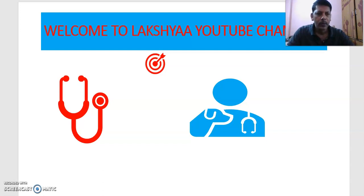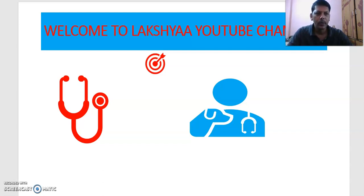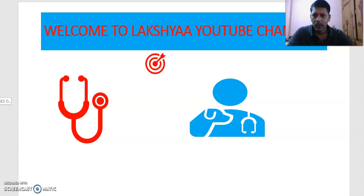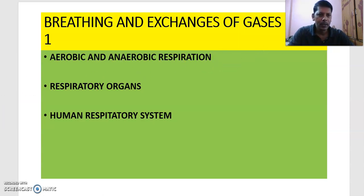In the state textbook, this is chapter 1B. We have 8 units. In the first unit, we have A and B — 1A is Digestion and Absorption, and 1B is Breathing and Exchange of Gases. In the NCERT textbook, this is also 1B, under the unit Human Physiology in the first year. Today our topic is Breathing and Exchange of Gases, and we are going to start Part 1.